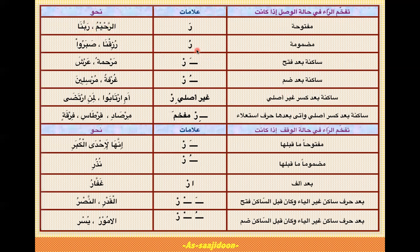وصلاً دوسری condition: اگر Ra پر ضمہ (پیش) آئے تو Ra موٹا ہوگا۔ مثلاً 'رُزِقْنَا' میں Ra پر ضمہ ہے تو 'رُو' کریں گے، 'رِ' نہیں کریں گے۔ اسی طرح 'سورة' میں بھی Ra پر ضمہ آئی ہوئی ہے تو 'رُو' موٹا ہوگا۔